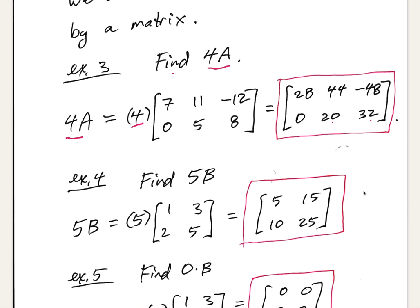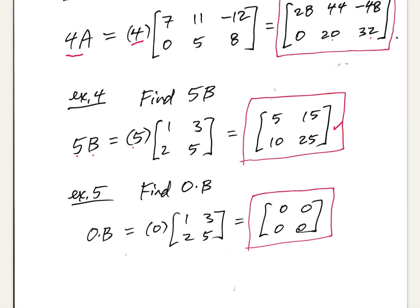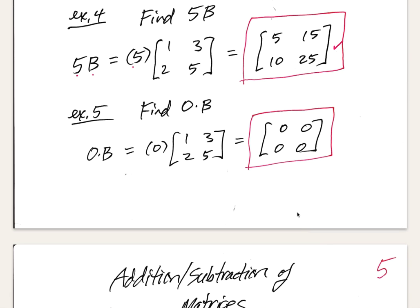For 5 times matrix B: 5 times [1, 3 / 2, 5] gives [5, 15 / 10, 25]. And 0 times B multiplies zero on every single entry, so we get zeros for all entries. Very simple — that's scalar multiplication.